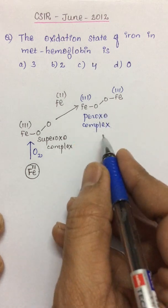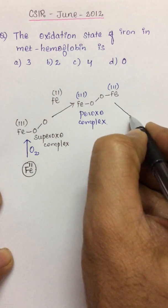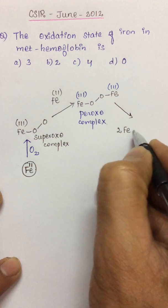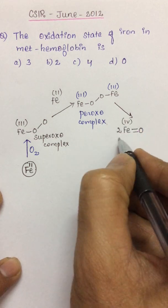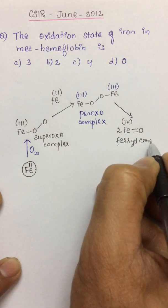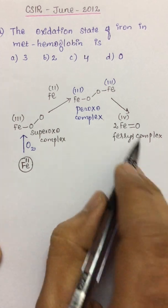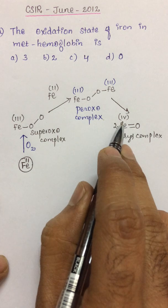Now this peroxo complex undergoes disproportionation, and as it undergoes disproportionation, we have a ferryl complex. This we refer to as a ferryl complex.